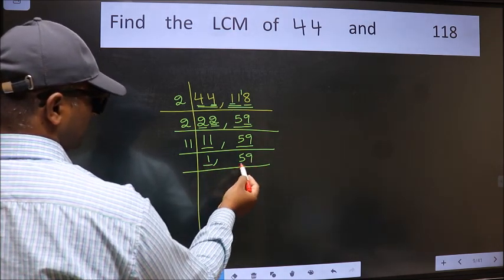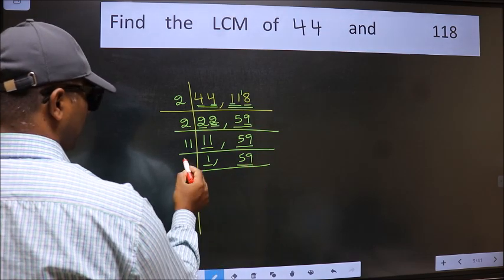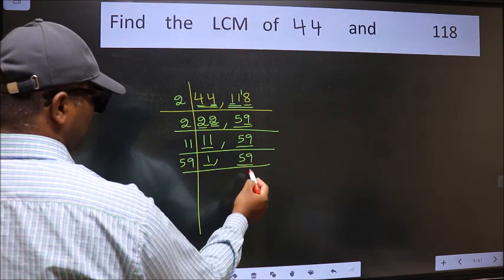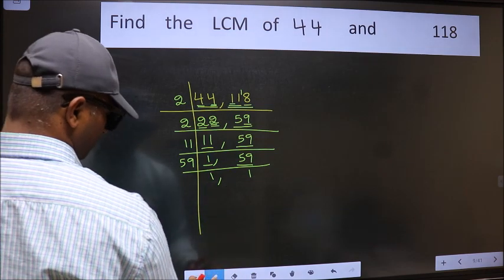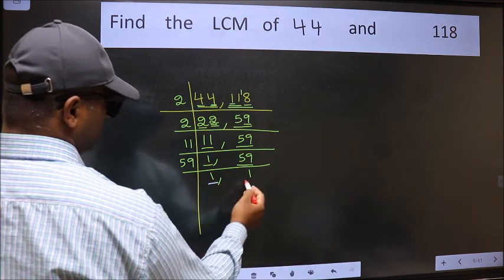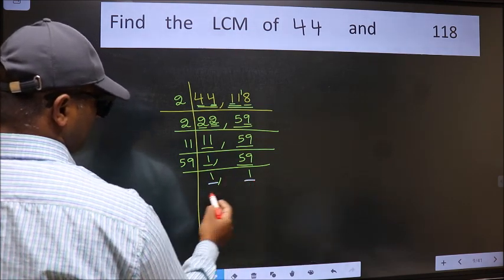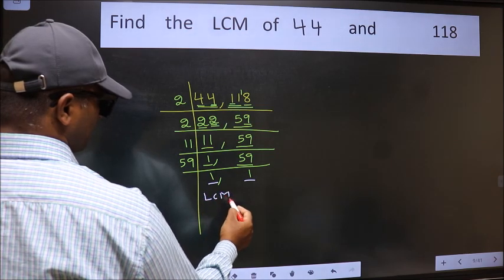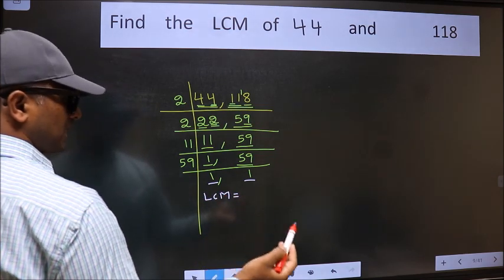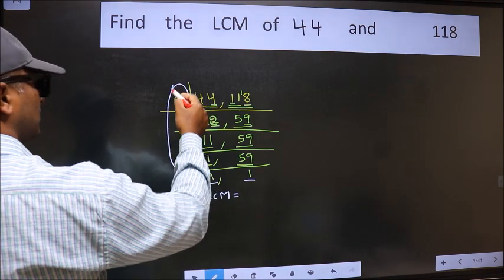59 is a prime number, so 59 times 1 is 59. We got 1 in both places, so our LCM is the product of these numbers.